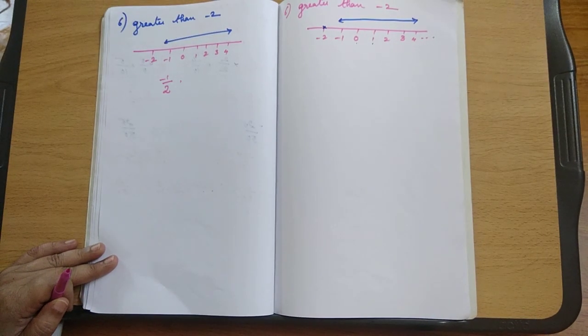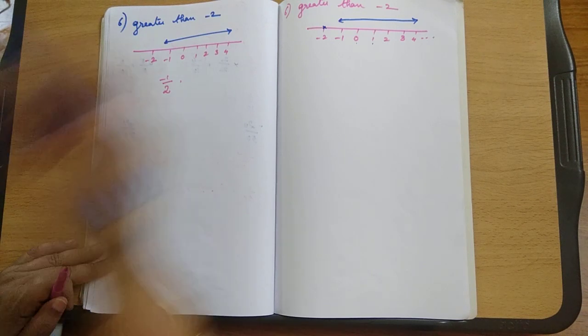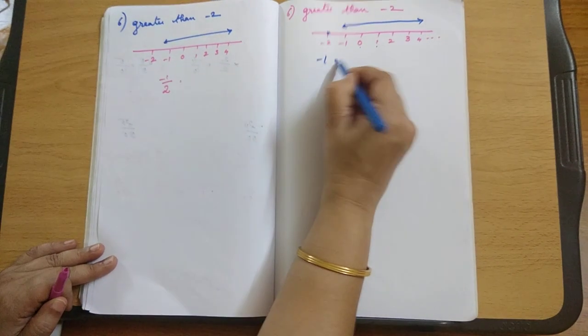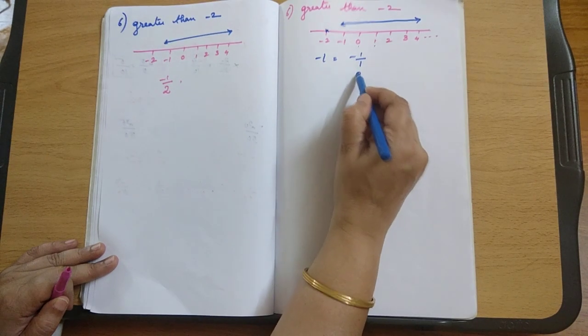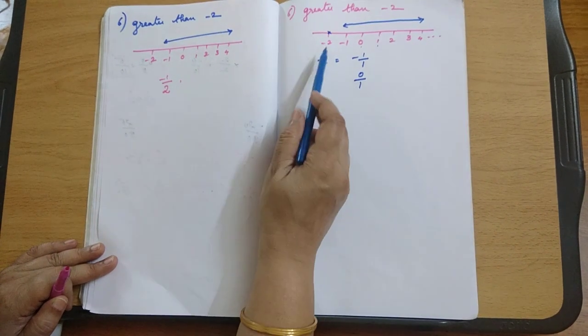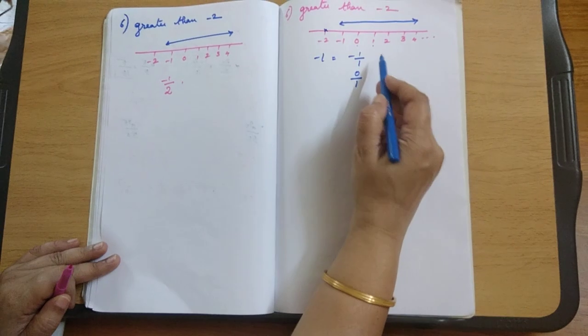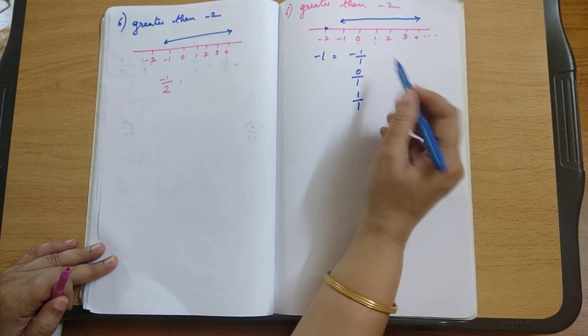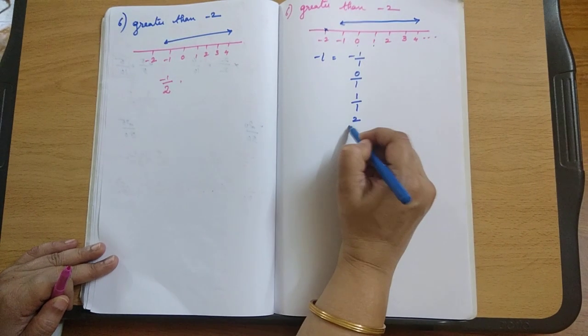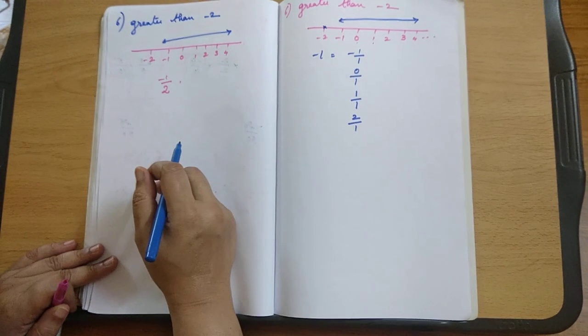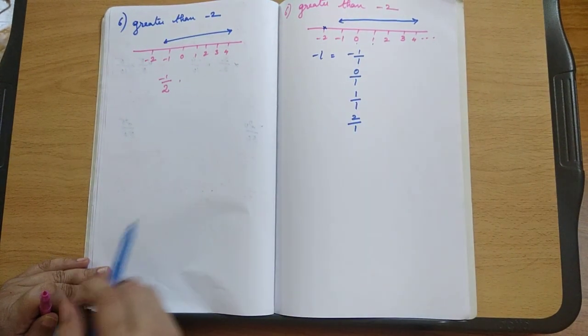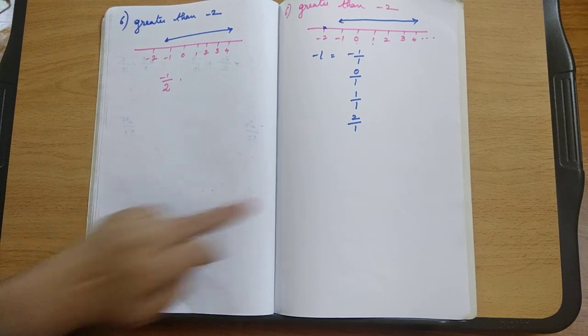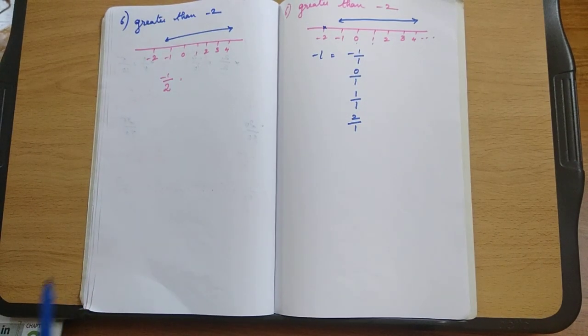Now minus 1 can be represented as minus 1 by 1. 0 can be represented as 0 by 1 which is also greater than minus 2. 1 or 1 by 1 is greater than minus 2. 2 by 1 is greater than minus 2. So you have countless rational numbers which are greater than minus 2.